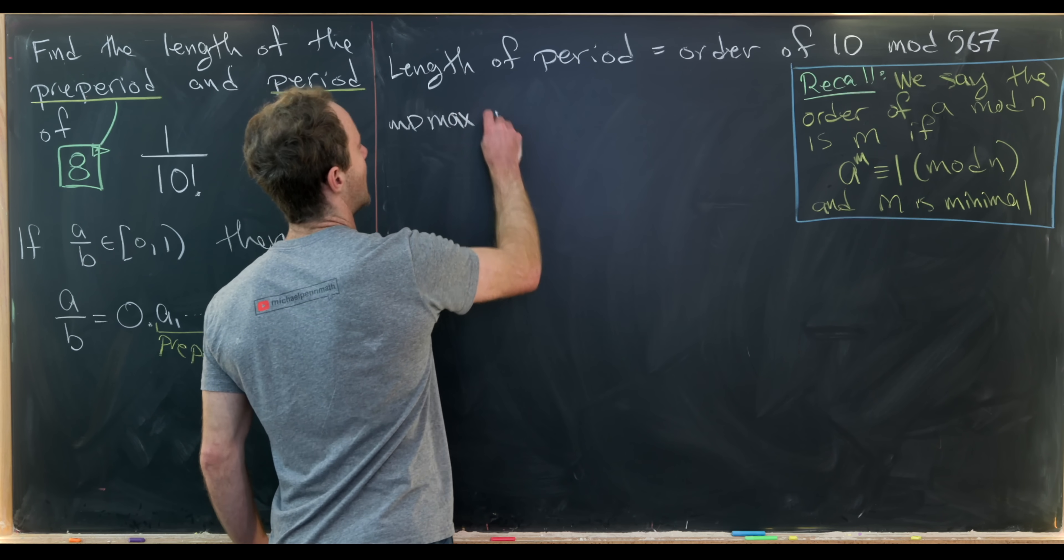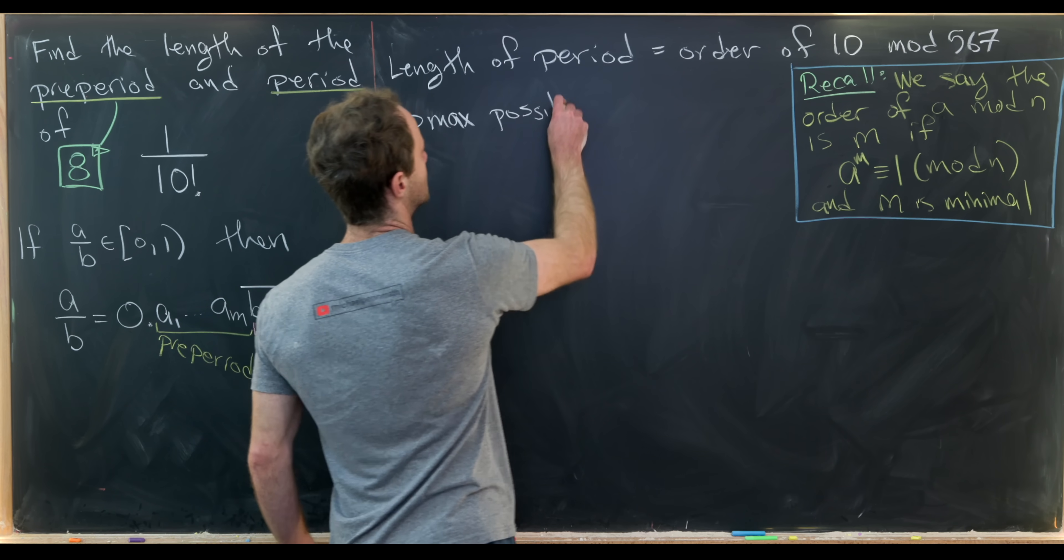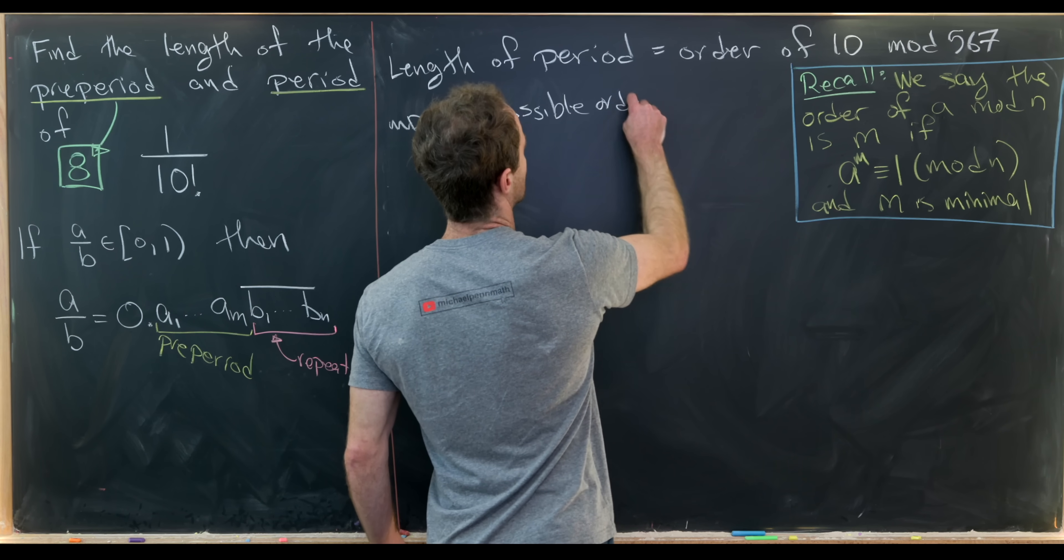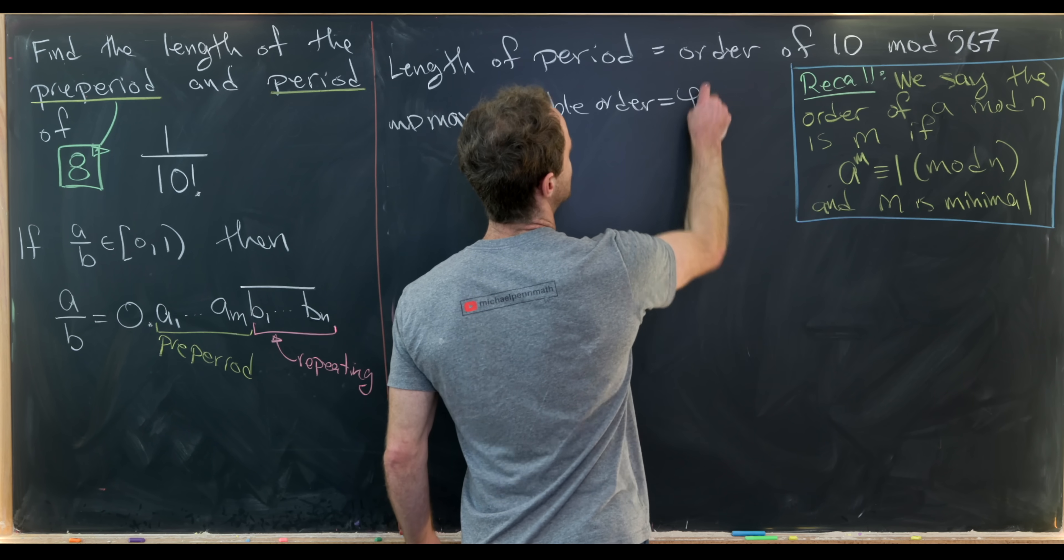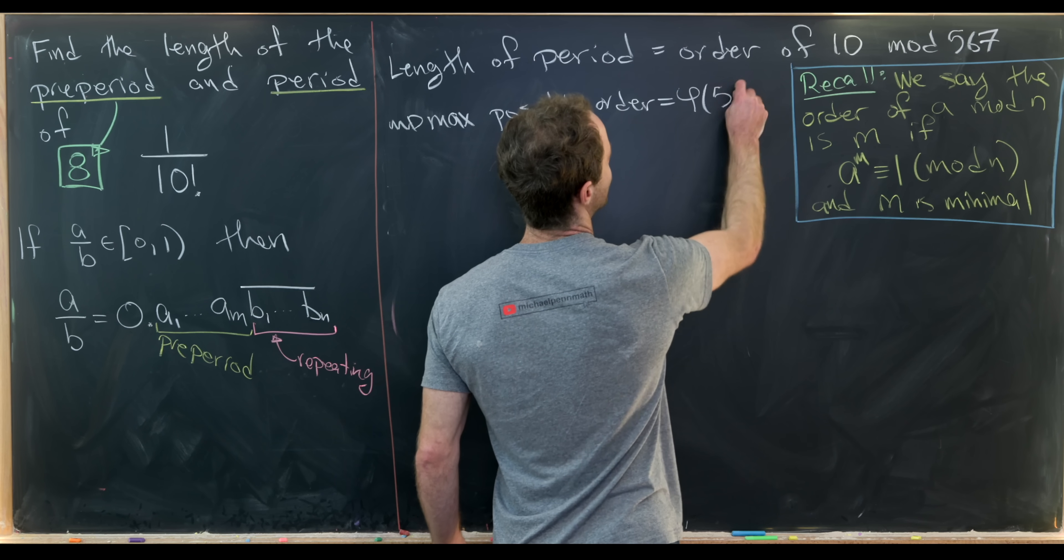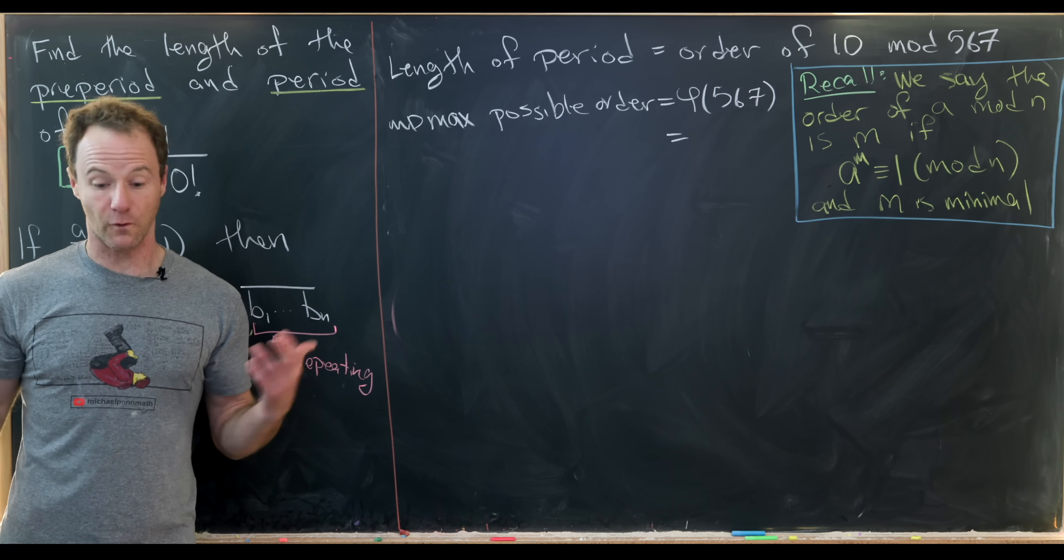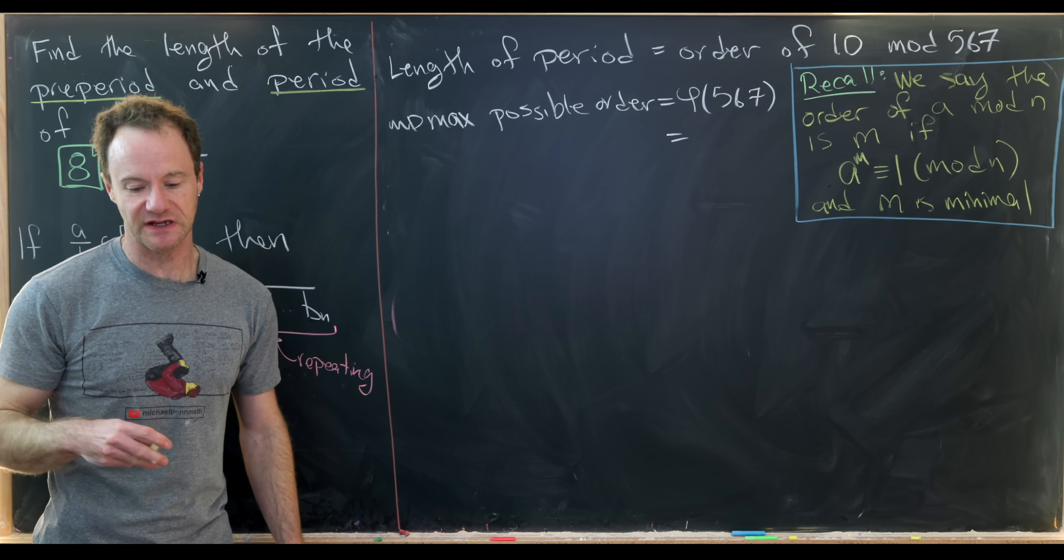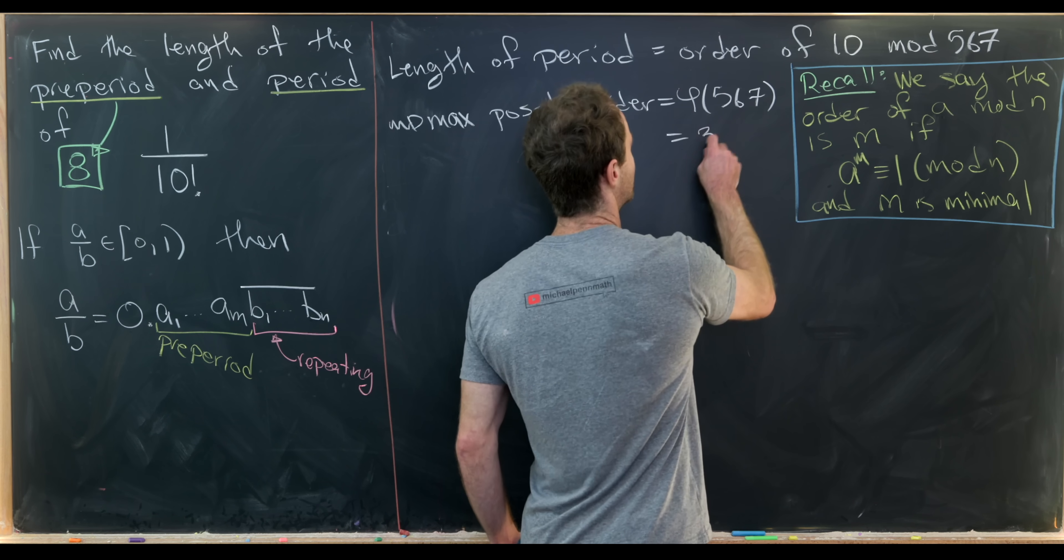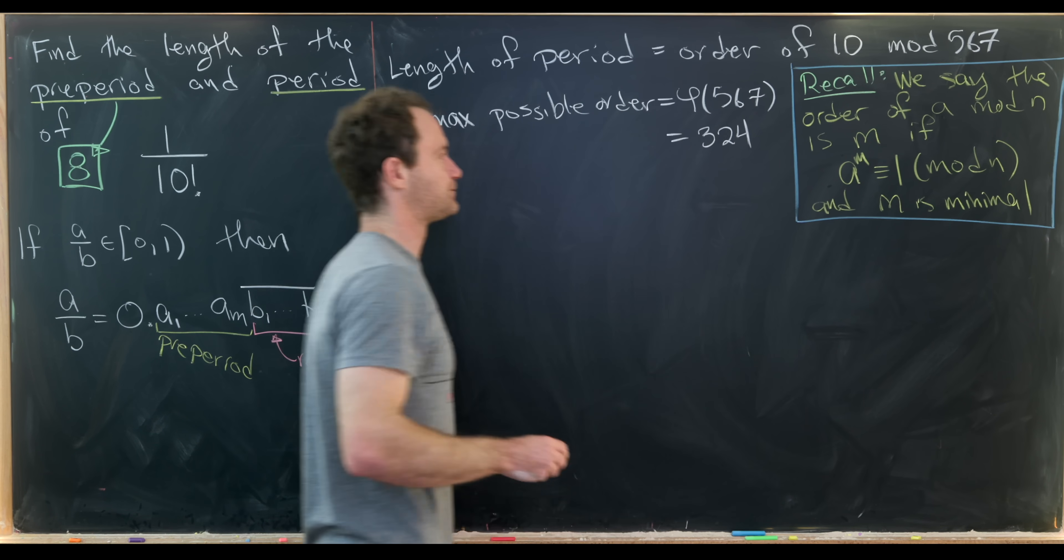So let's maybe write that down. So the maximum possible order here is equal to phi of 567. But you can calculate using the standard formula for phi if you'd like to. I'll just give you the answer. This gives us 324.